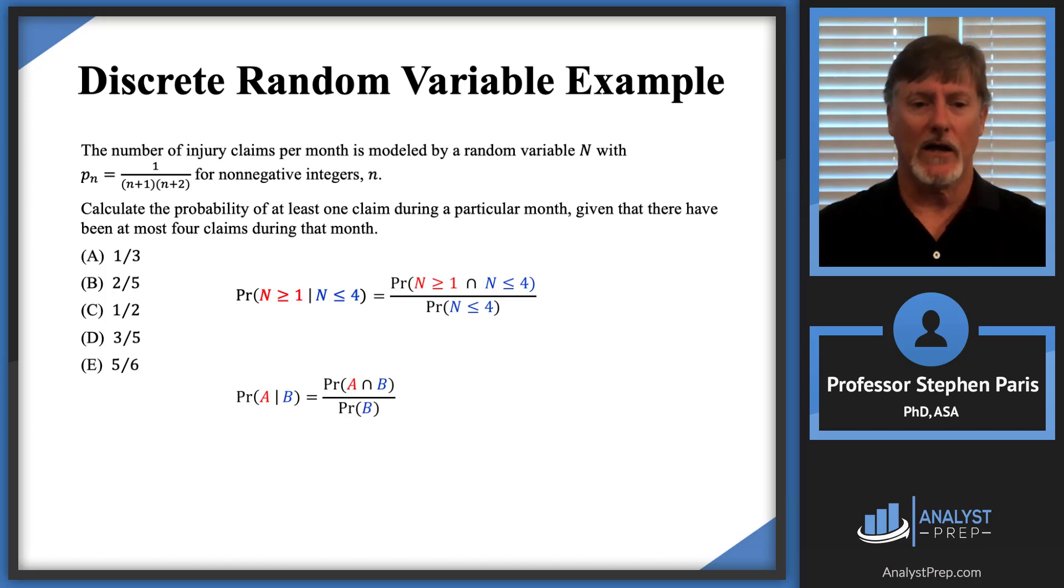Then I get that the probability we seek is a ratio. In the numerator, I have the probability that N ≥ 1 and N ≤ 4, which I can rewrite as just the probability that N is between 1 and 4 inclusively.